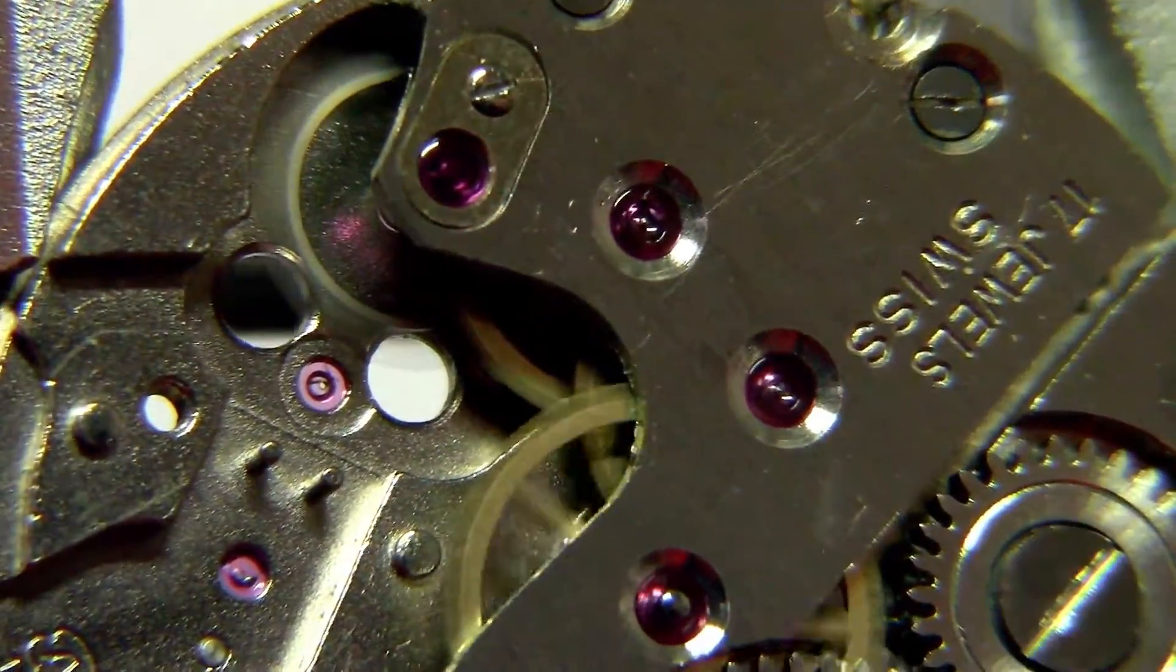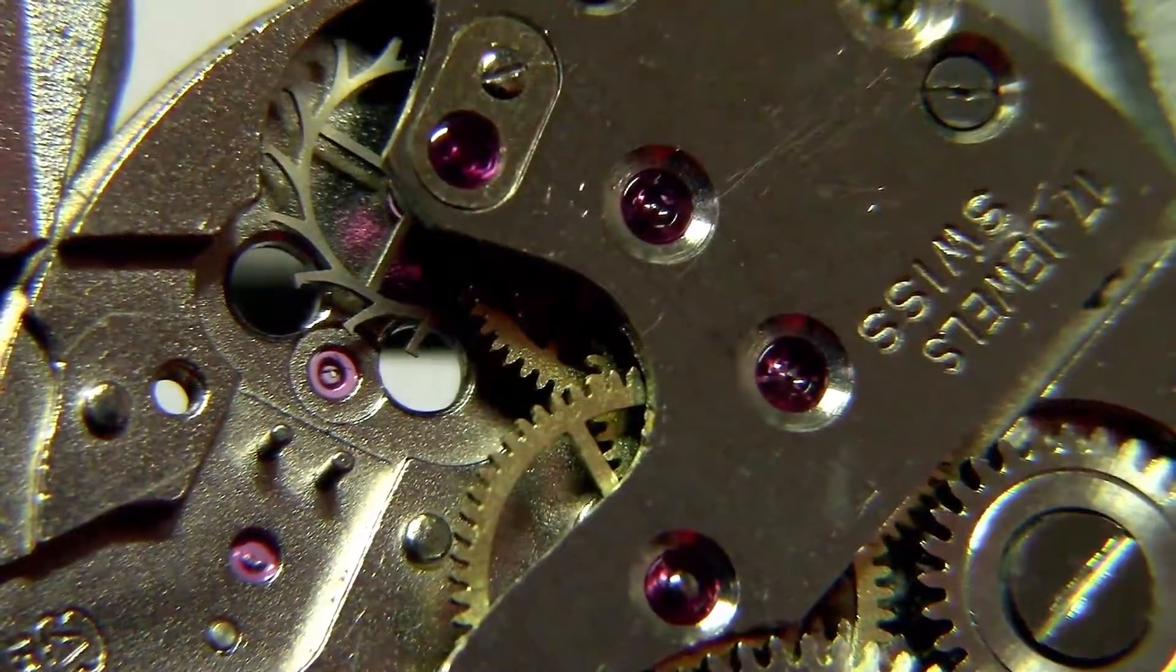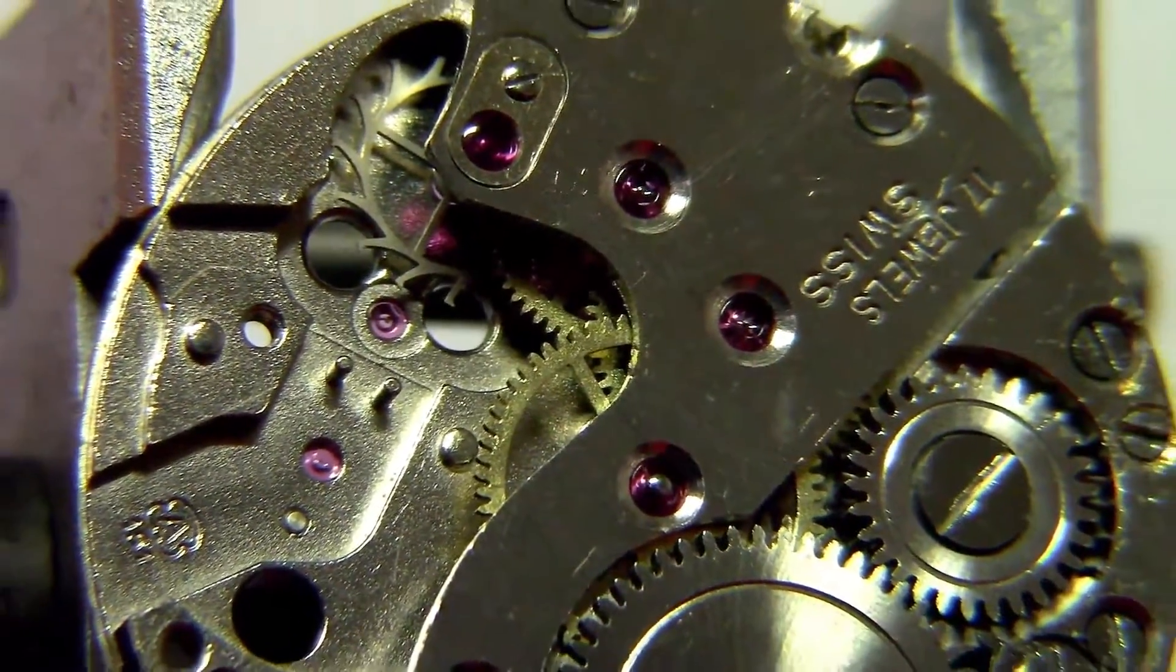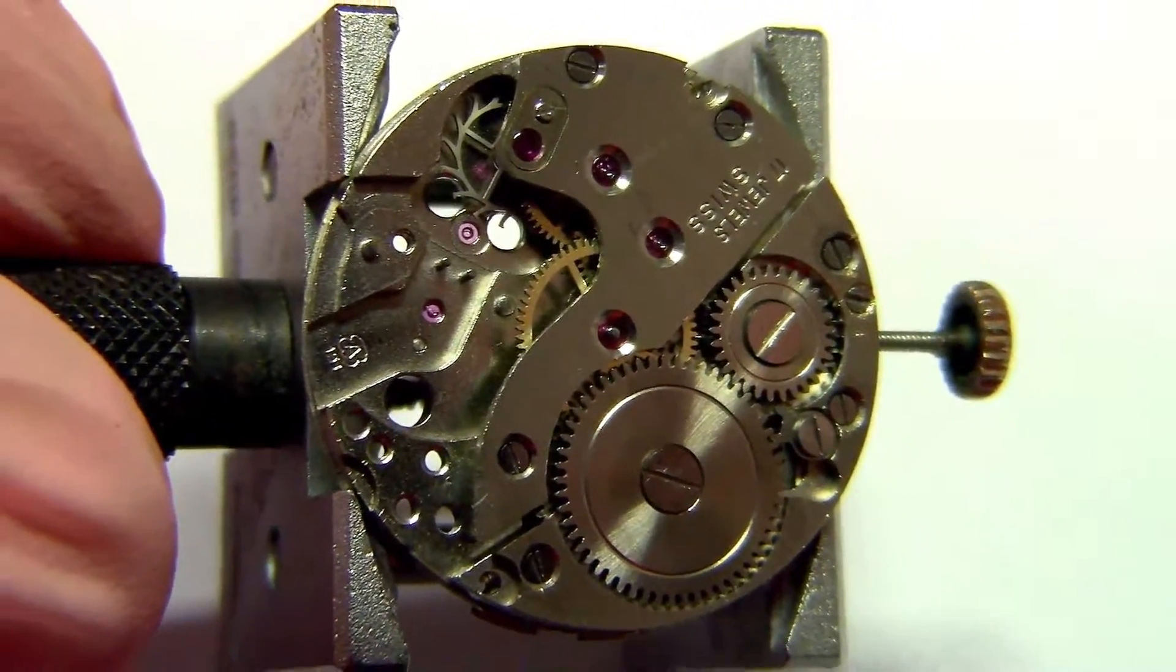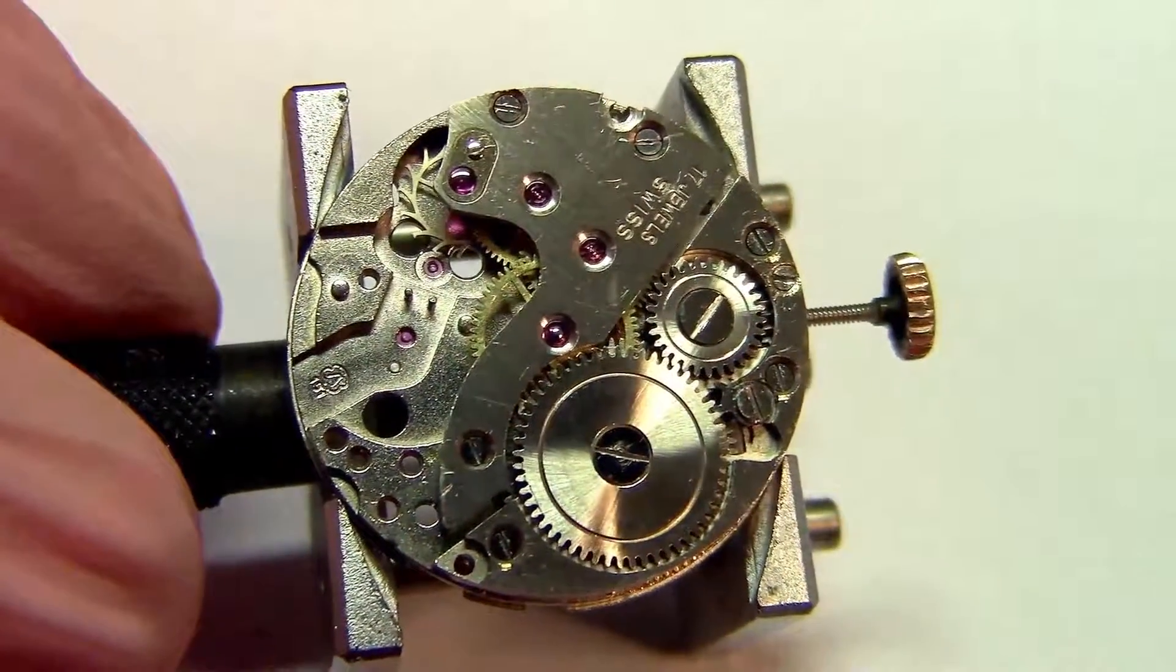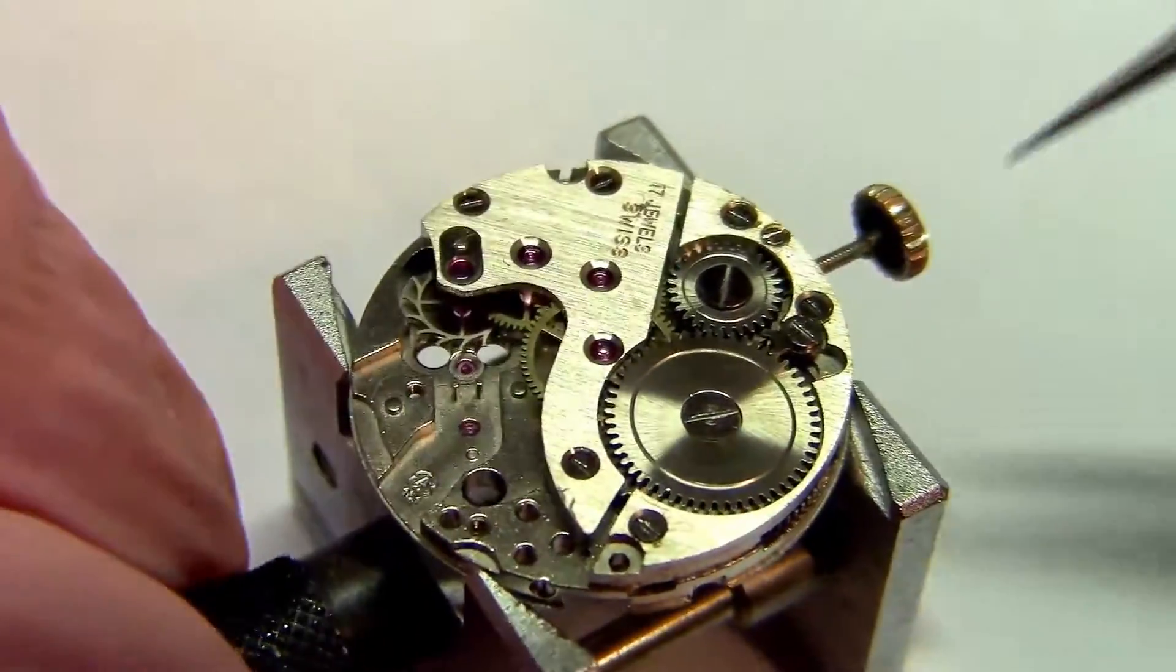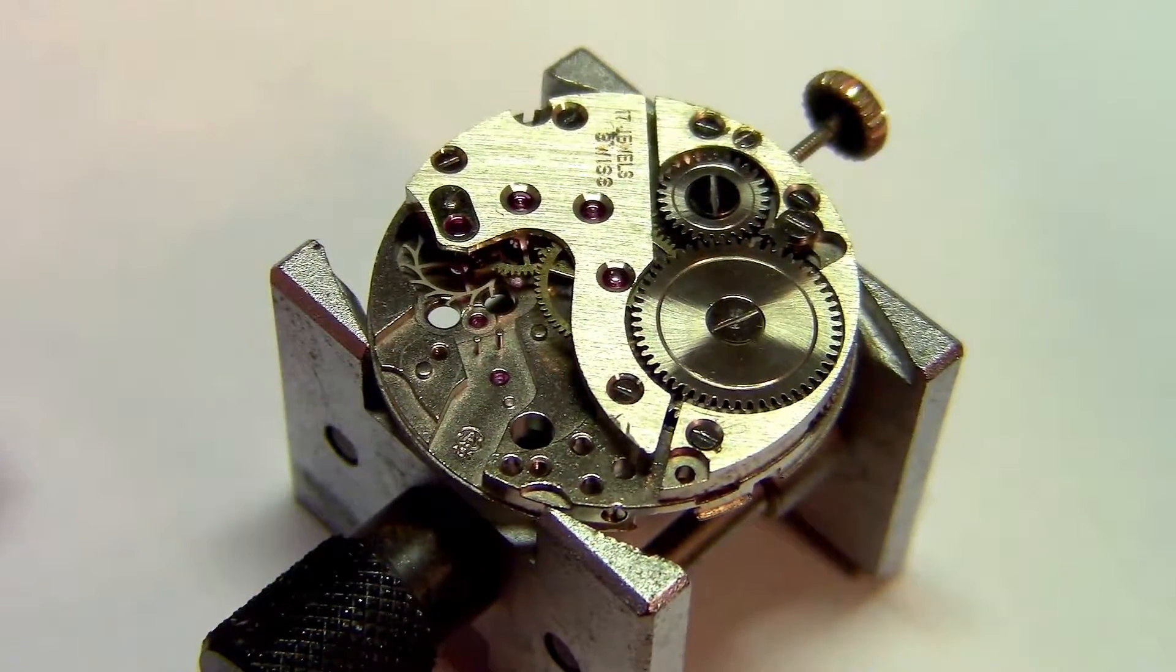So if it wasn't for the escapement, the mainspring would unwind completely in a few seconds like this instead of 38, 40 or 42 hours, which is more or less the power reserve of this movement. And that's exactly what the escapement does. It allows the energy from the mainspring to escape in a controlled fashion, in a timed fashion.